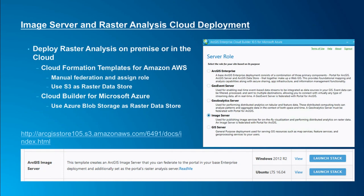For cloud infrastructure deployment, Esri provides an Amazon AWS CloudFormation template with two stacks: one for basic enterprise GIS deployment containing the portal, hosting server, and ArcGIS Datastore; and one for deploying a standalone ArcGIS Image Server site. There is also a Cloud Builder app for deploying on Microsoft Azure. The key difference is that on Amazon you need to manually federate the image server with your portal. On AWS you use Amazon S3 as your raster store; on Azure you use Azure Blob Storage.